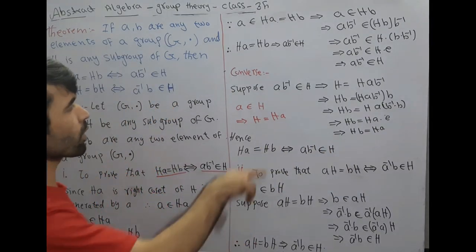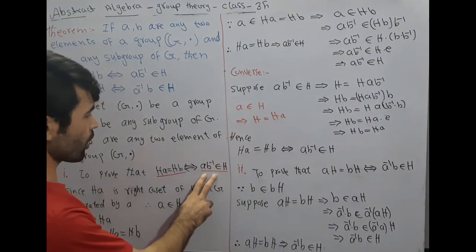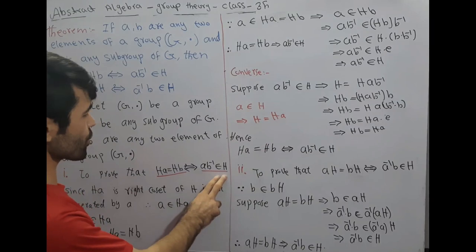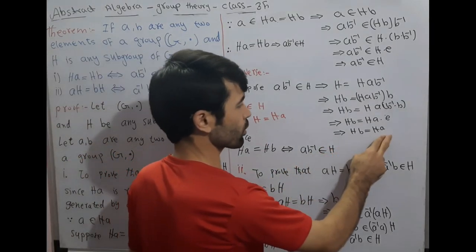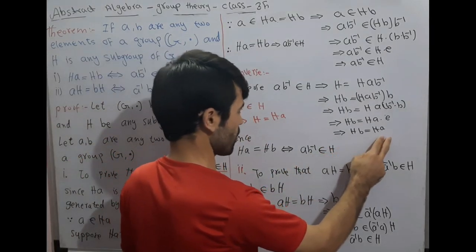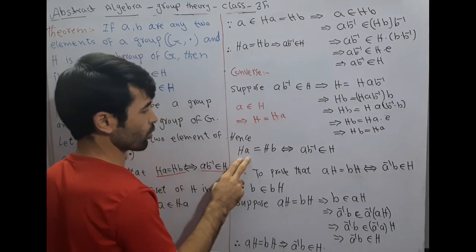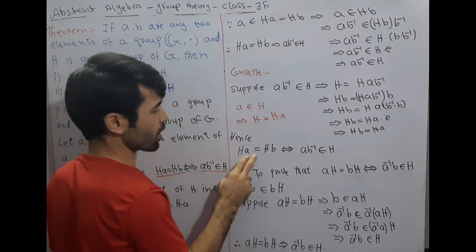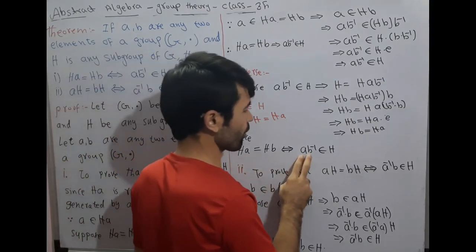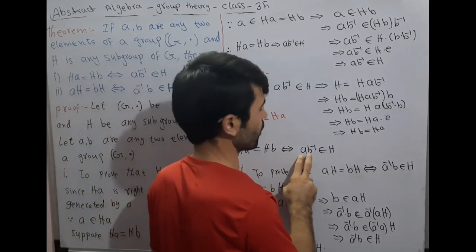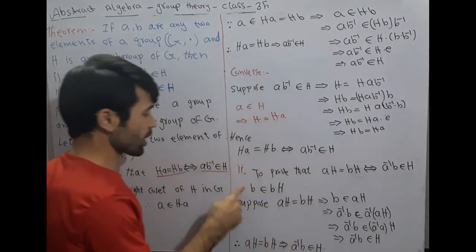We assumed that a·b⁻¹ belongs to H and proved that Hb = Ha. Therefore we conclude: Ha = Hb if and only if a·b⁻¹ belongs to H. This completes case one. Now case two.